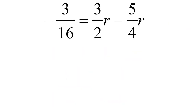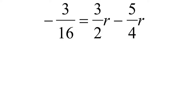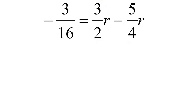Looking at this next one, we should notice there are fractions — there are denominators — so this is a fraction type of linear equation. Once again, rewrite these. Many learners prefer to keep it as 3R over 2 minus 5R over 4, and I agree — it's a bit more comfortable.